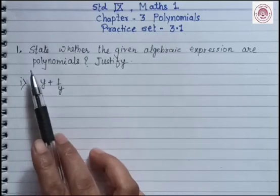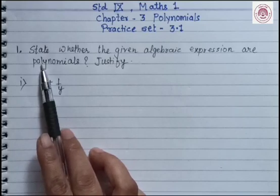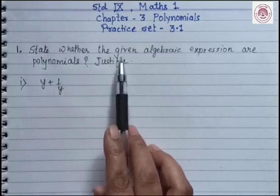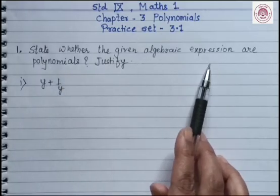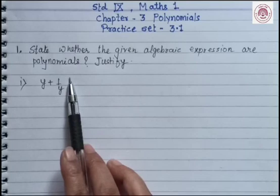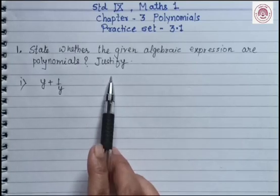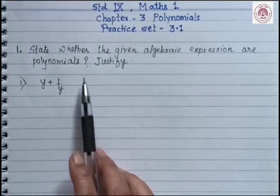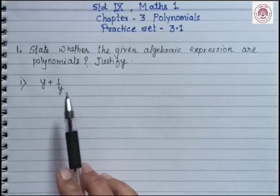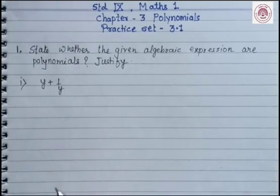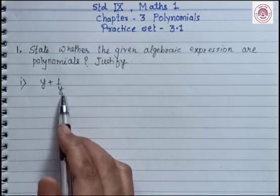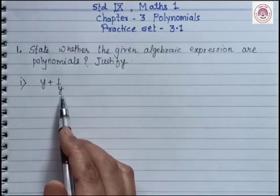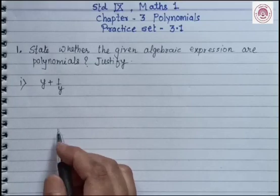The first question is: state whether the given algebraic expressions are polynomials and justify. The first expression is y plus 1 upon y. We have to find out whether it is a polynomial or not.